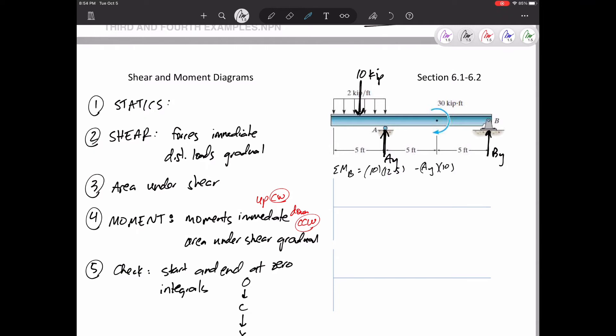Sum of the moments about B would be that 10-kip force times 12.5, its moment arm, as a positive moment, then a negative moment from that AY times its 10-foot, and then a negative 30. Sum of the moments equal to zero, I can solve for AY. I've got AY is 9.5 kips. And then, summing the forces in Y, I get that BY is going to be 0.5 kips.